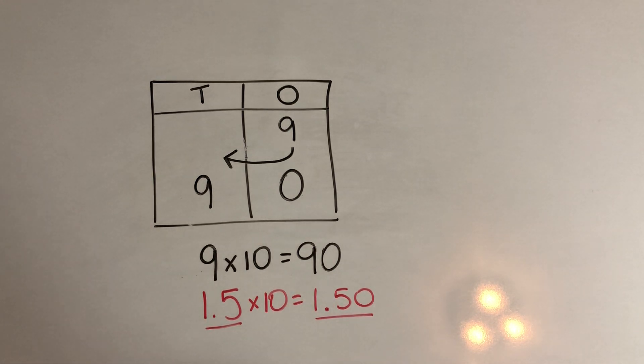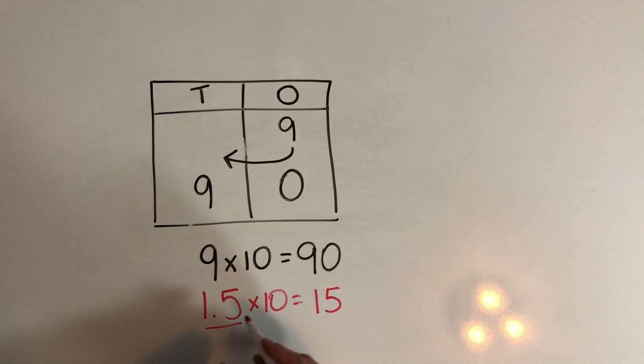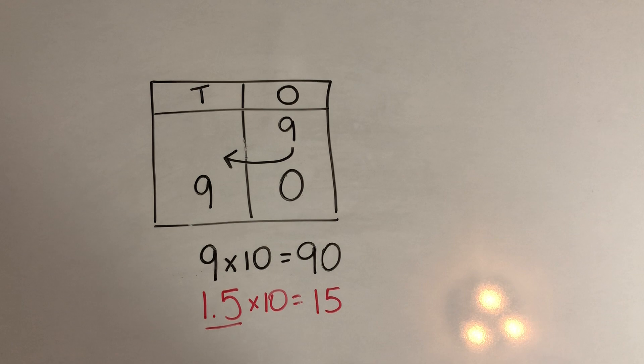So when we start multiplying decimals by 10, we find out that we have to shift everything one place to the left. So 1.5 actually becomes 15 because we're shifting that 5 over into the 1s place and shifting the 1 to the 10s place. So again, if you haven't learned decimals, don't worry about this. But I do just want you to understand why we want to think in terms of the place value rather than a trick of just adding a 0.